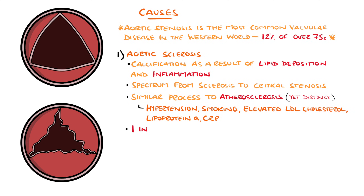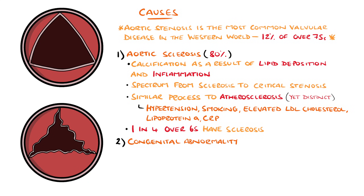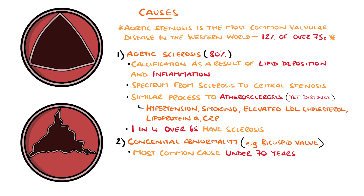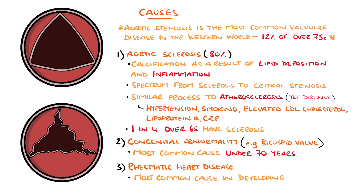Around 1 in 4 people over 65 are thought to have aortic sclerosis, and 80% of aortic stenosis cases are linked to calcification. Normally the aortic valve is a tricuspid valve featuring three leaflets, but a congenital bicuspid valve makes up the majority of the remaining cases and is the most common cause under 70 years of age. In developing countries, rheumatic fever is the most common cause across all age groups.